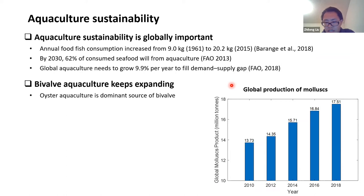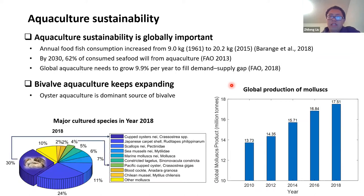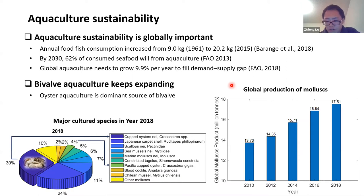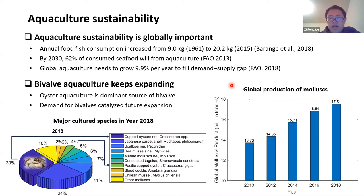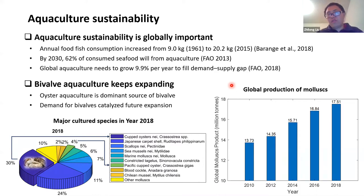Oyster aquaculture is the dominant shellfish resource. The cupped oyster and Pacific cupped oyster together account for more than 34% of total shellfish production. From 2010 to 2018, oyster aquaculture grew about 27% in total, but annual increment is only 4%. This means in the future, oyster aquaculture needs to expand to fill the demand-supply gap, and we will see more farms and larger-size farms in the area.